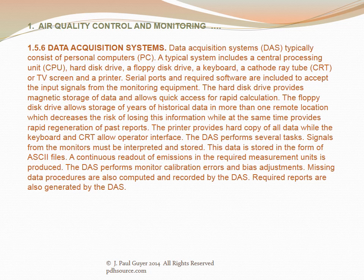The DAS performs several tasks. Signals from the monitors must be interpreted and stored in the form of ASCII files. A continuous readout of emissions in the required measurement units is produced. The DAS performs monitor calibration errors and bias adjustments. Missing data procedures are also computed and recorded, and required reports are generated by the DAS.